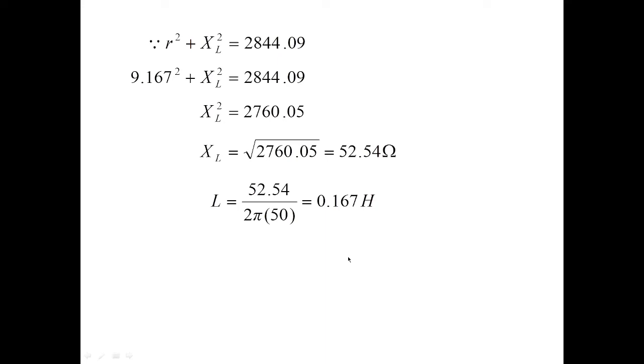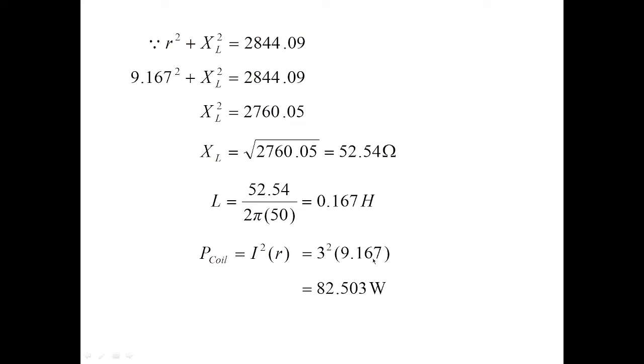Once the choke coil parameters are obtained, we can calculate the power consumed by the coil. Power depends on the real component, not the reactive component. P = I² × r = 3² × 9.167 = 82.503 watts. This is how the choke coil parameters are estimated for the given problem.